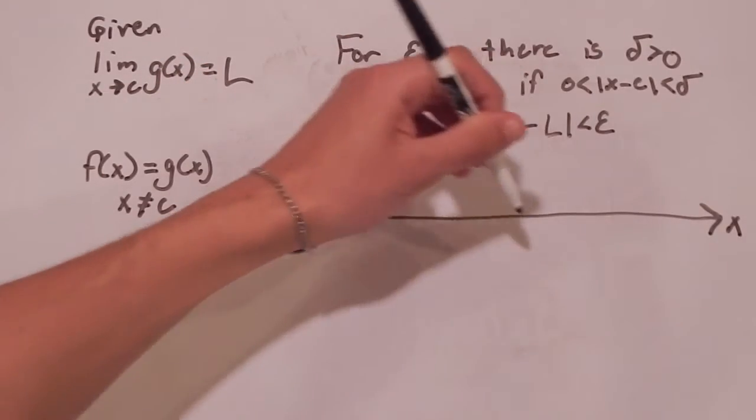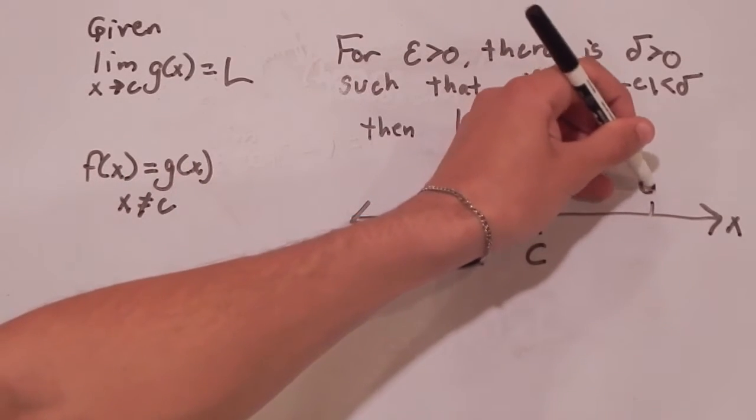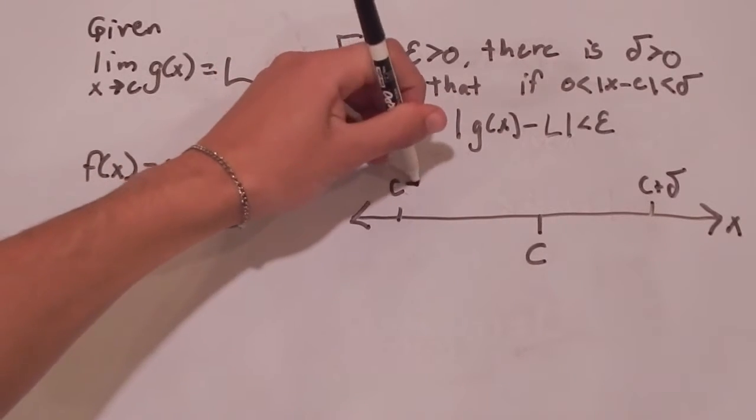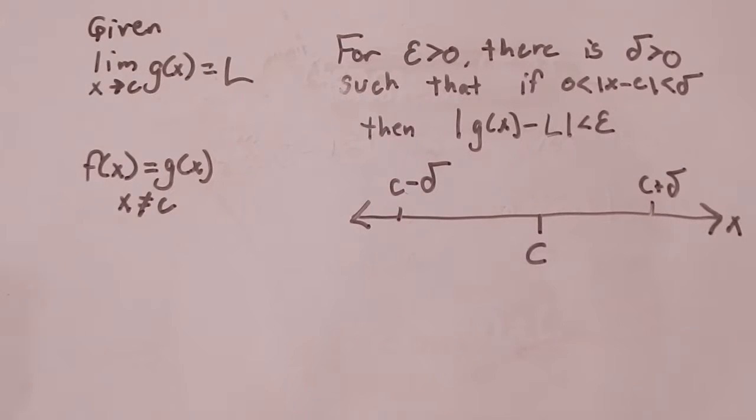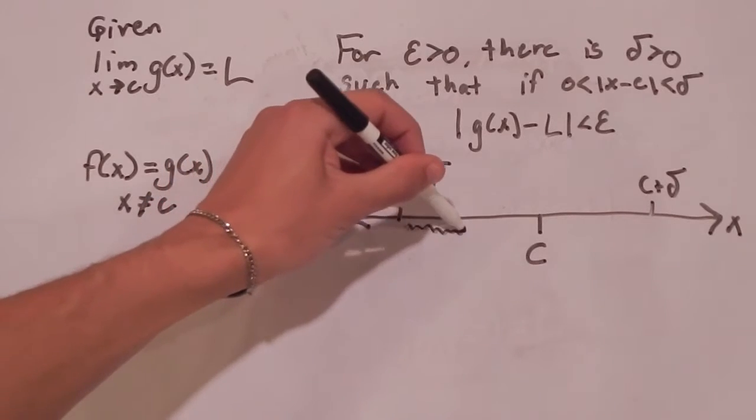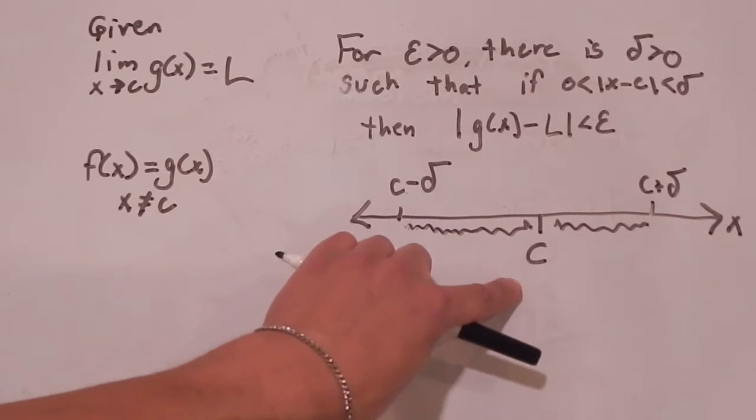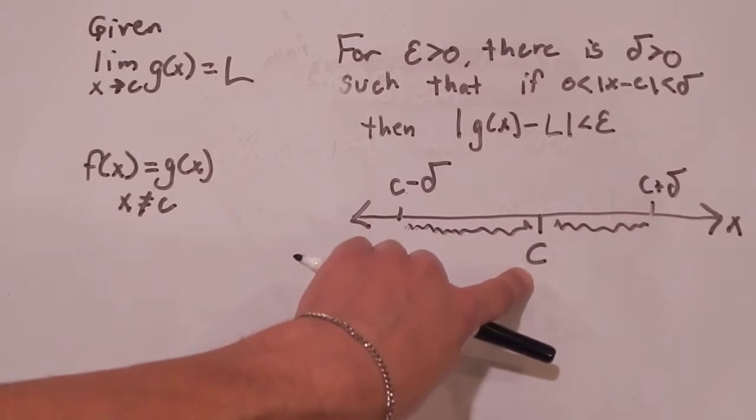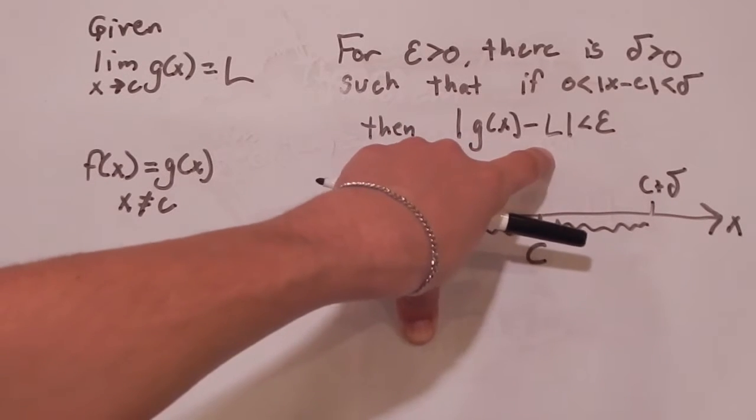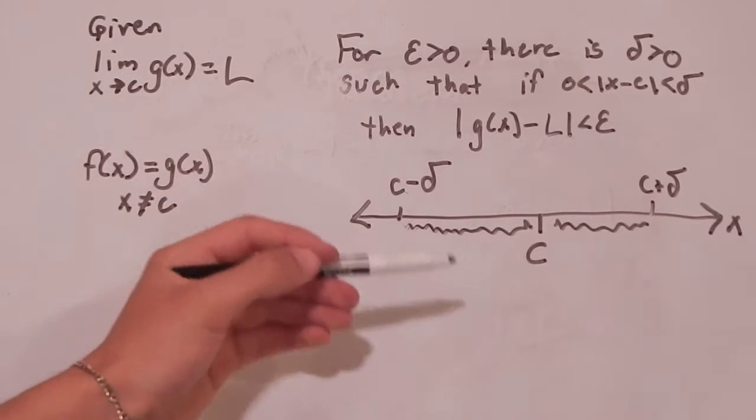So this is our number line of X values, and we've got C here. We've got C plus delta and C minus delta. So since this limit exists, we're basically saying that all the X values in here, from C minus delta to C plus delta, except possibly at X equals to C, that all of these X values return G of X values that are within epsilon of L. So that's what makes this limit true.